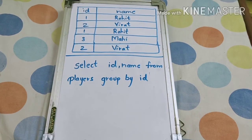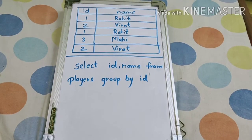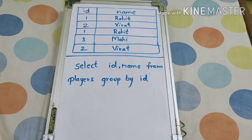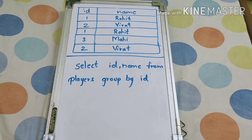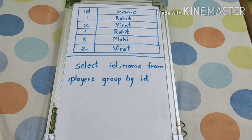Welcome back guys, this is our second video in the SQL interview question series. The question is to find all the duplicates from the given table. Consider this table where Rohit and Virat appear two times and Mahi one time. We have to print Rohit and Virat — that is, records which have appeared more than one time — duplicate records with the same id.